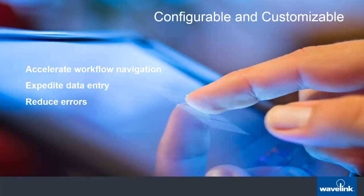Furthering on the speed and accuracy of data capture, Velocity includes the ability to create custom on-screen keyboards. This means you can now present your workers with only the keys that are relevant for the screen, reducing the risk of incorrect key entry and making it easier for workers to find the keys they need — rather than hunt and peck through a 50-odd key interface. In addition, you can configure scanning parameters and other elements on the device, including setting host connectivity and emulation type preferences.